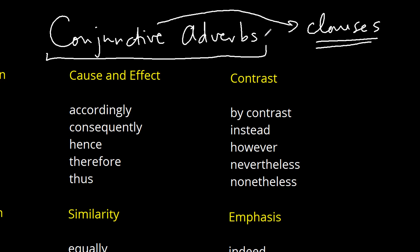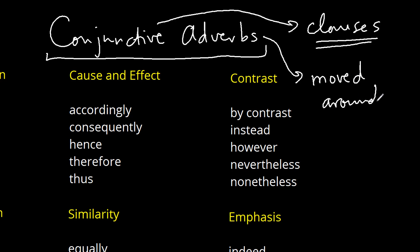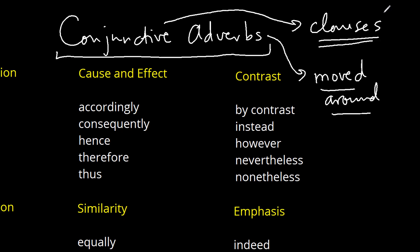They're similar to adverbs in the sense that you can move them around in the sentence, whereas conjunctions cannot — they have to stay in their place. So if you think about these two things — that they can connect clauses and you can move them around — then you get the gist of what conjunctive adverbs are doing.